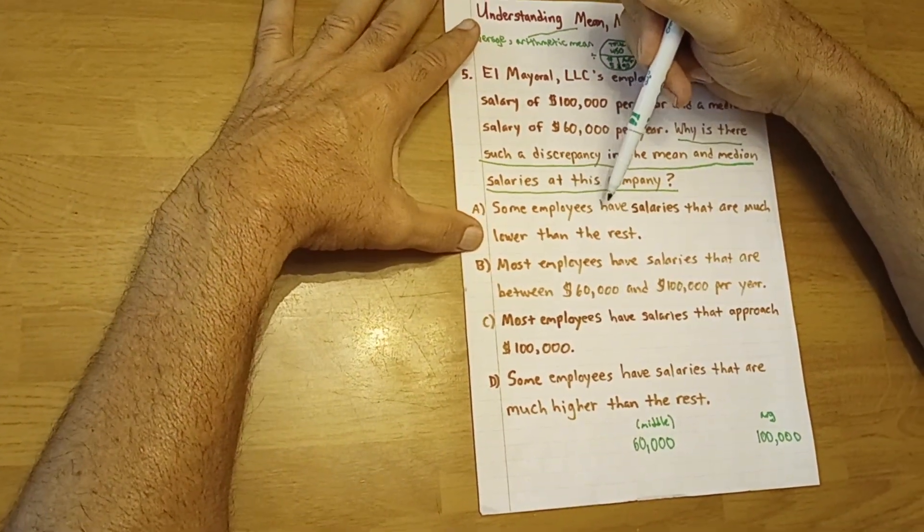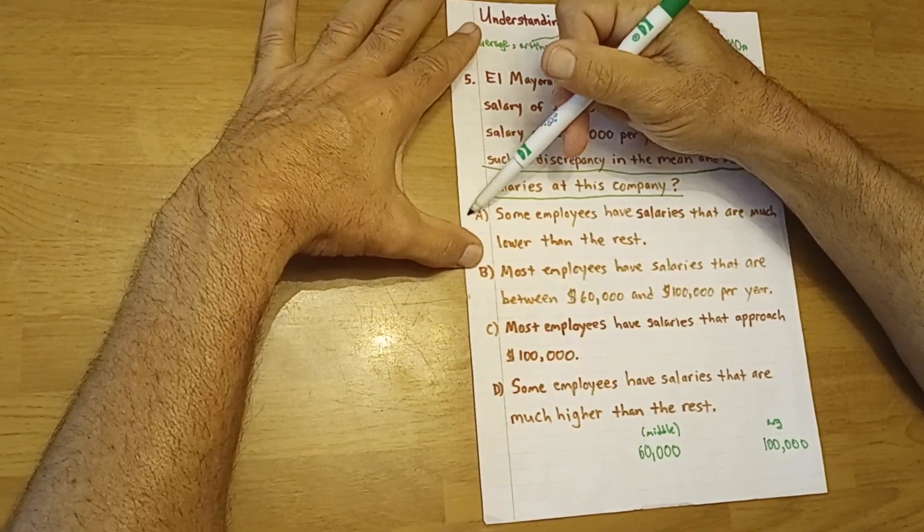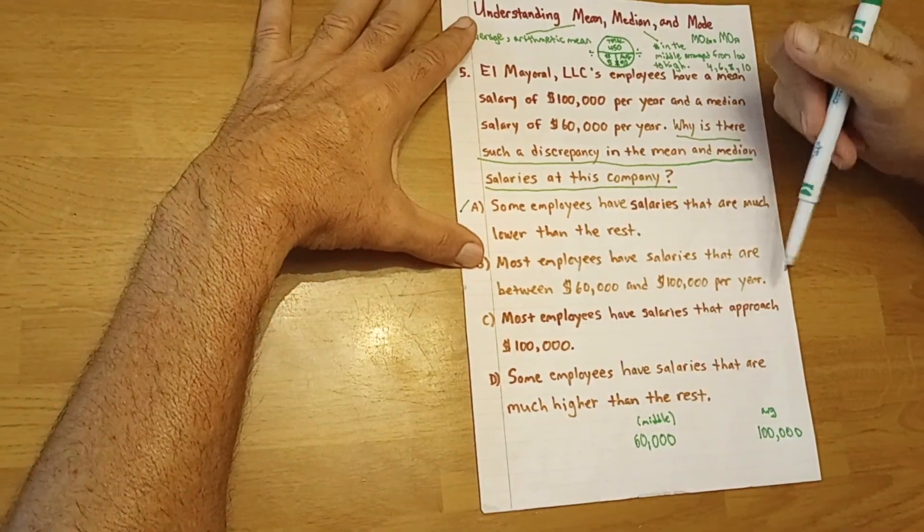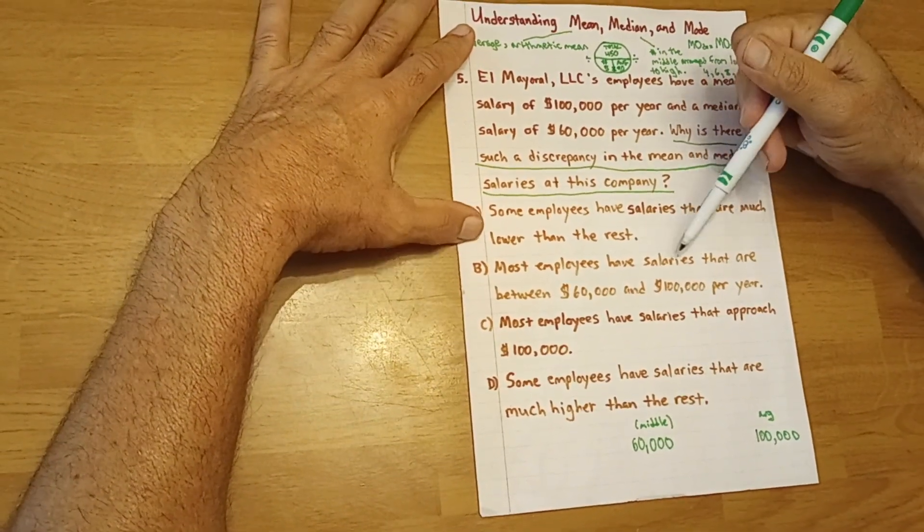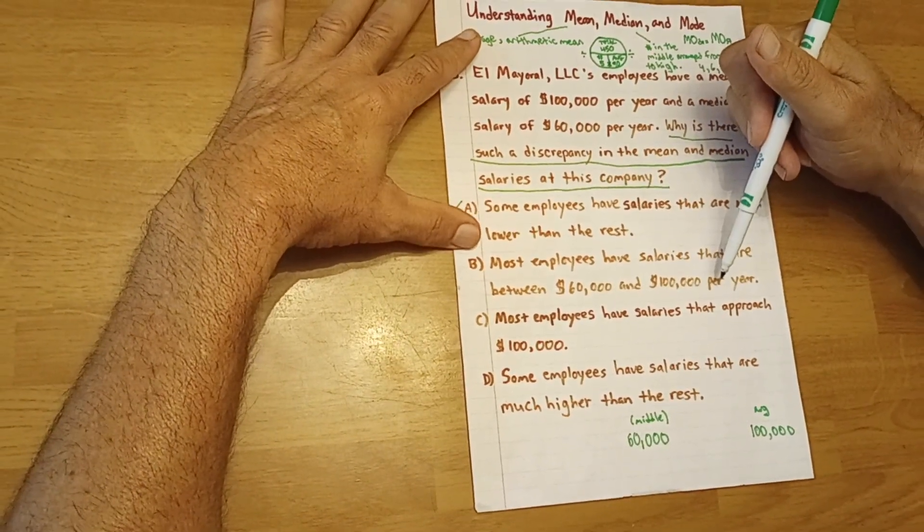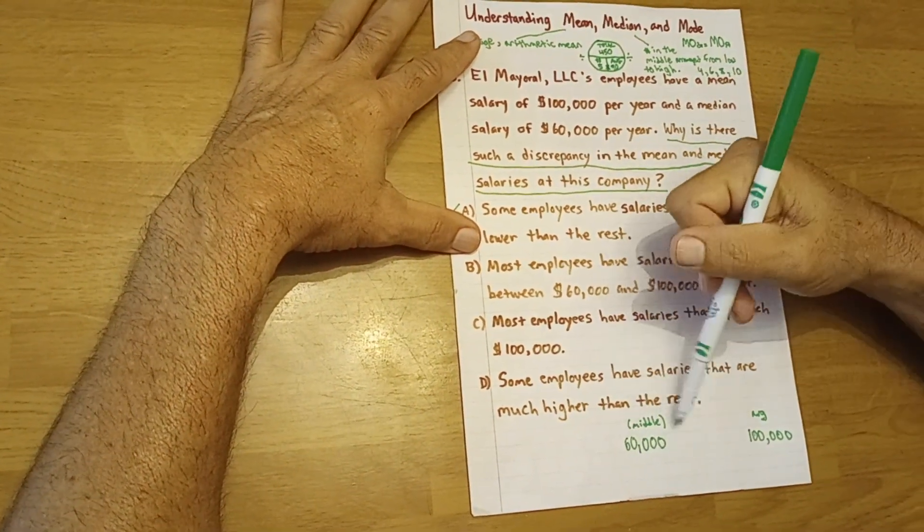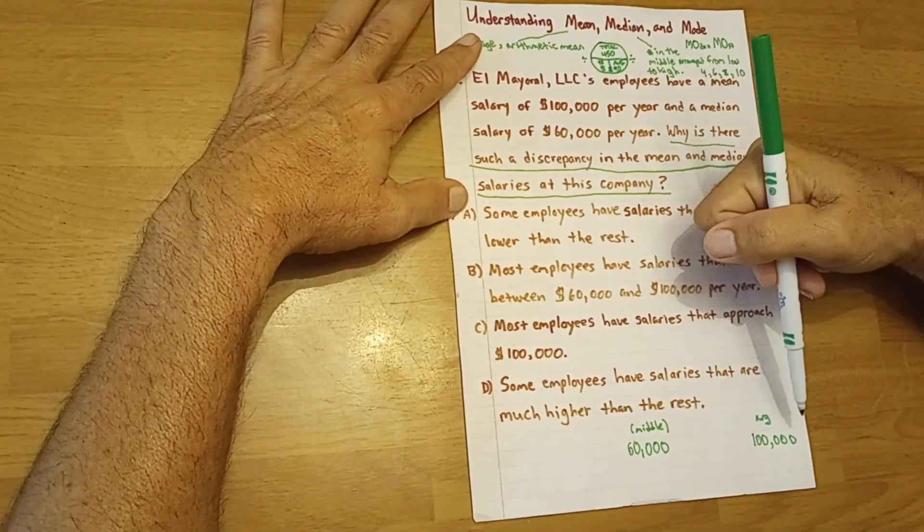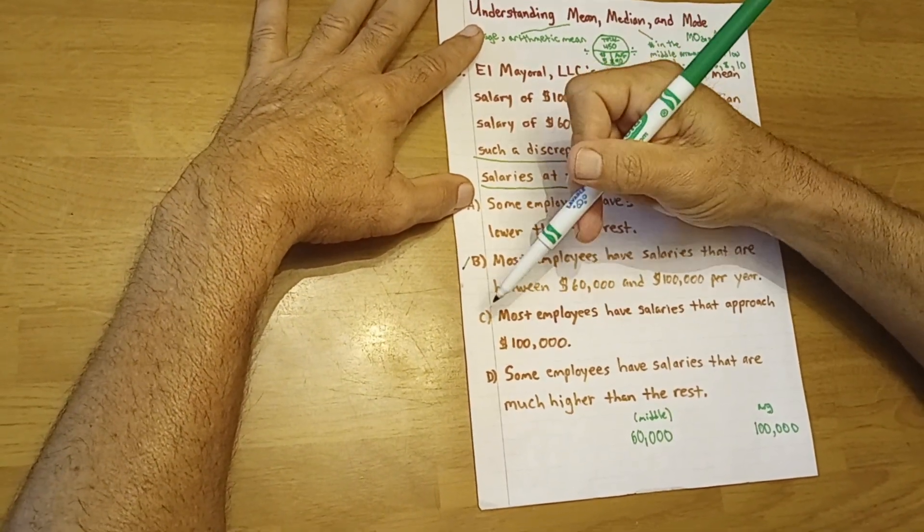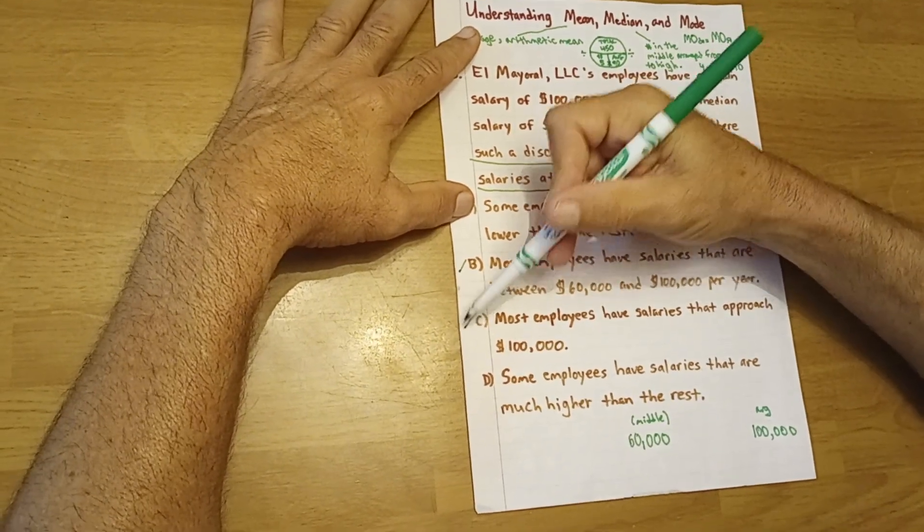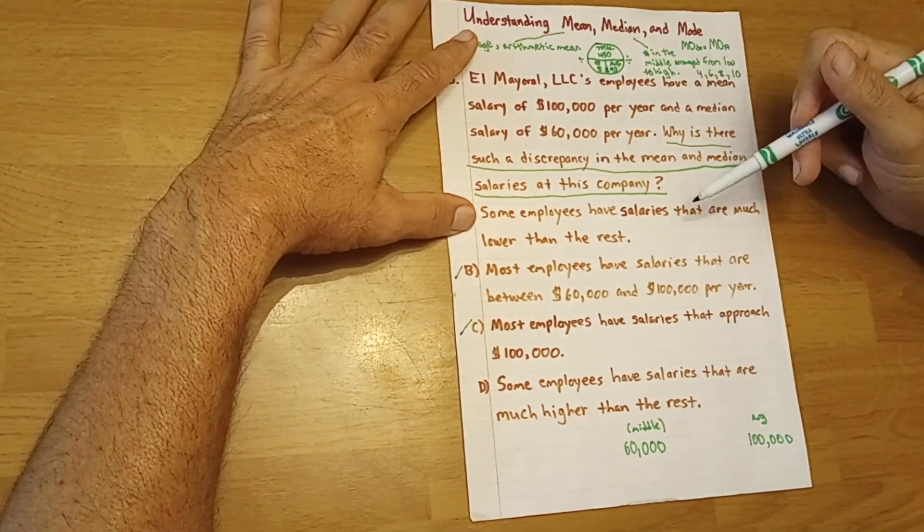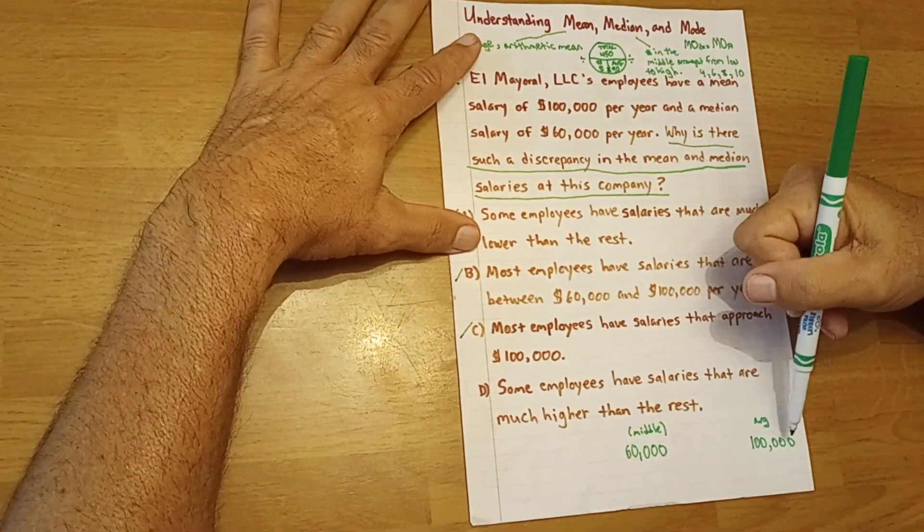Well, it wouldn't be that some employees have salaries that are much lower than the rest. If that were the case, then obviously it would be going down, not up. If most employees have salaries that are between $60,000 and $100,000 a year, it wouldn't mean that this middle salary would move to $100,000 as an average. And most employees have salaries that approach $100,000 would not be right either. It wouldn't matter how many approach $100,000; we would need the average salary to be $100,000.